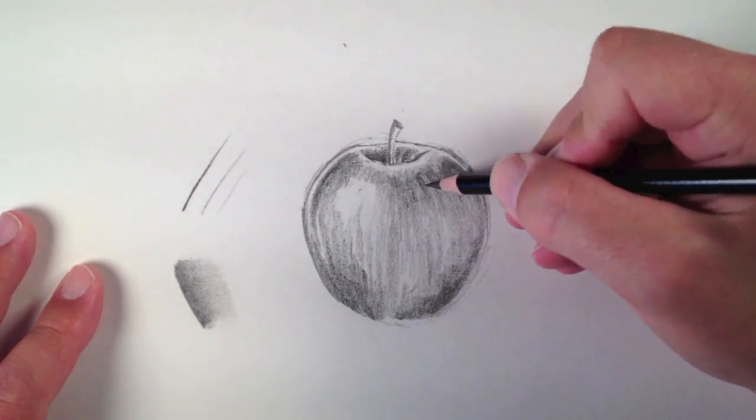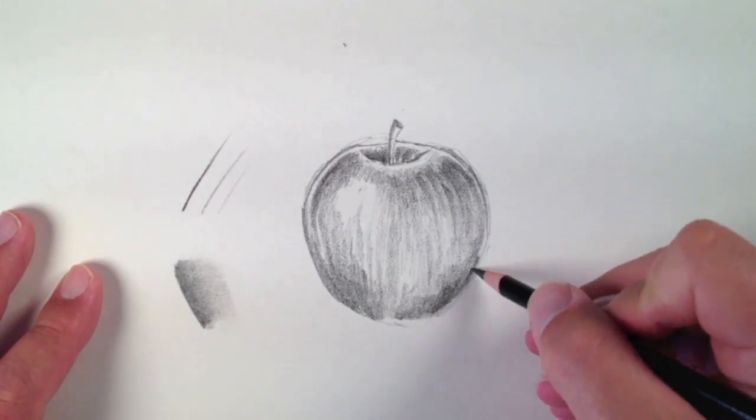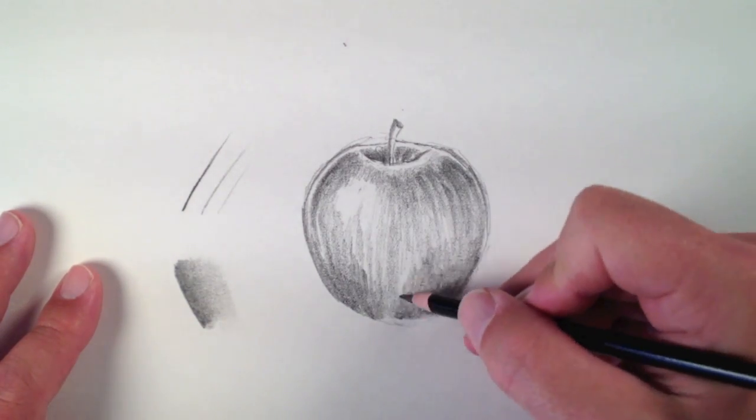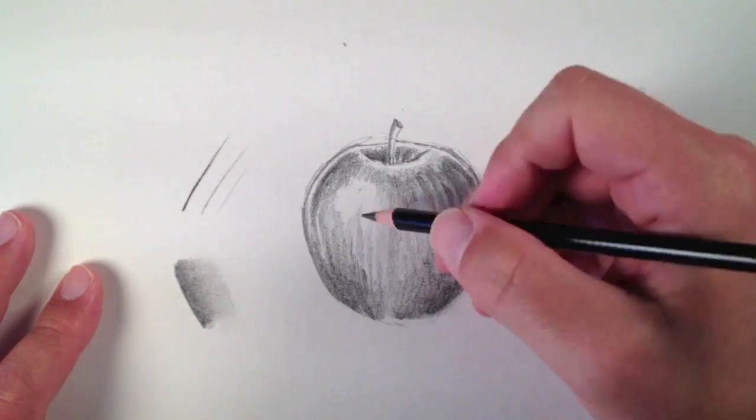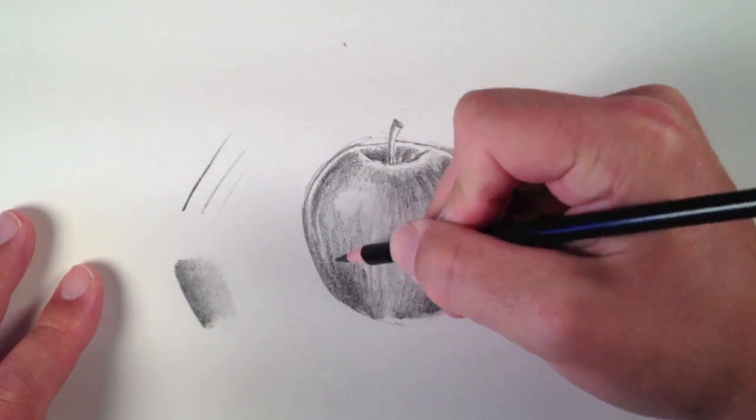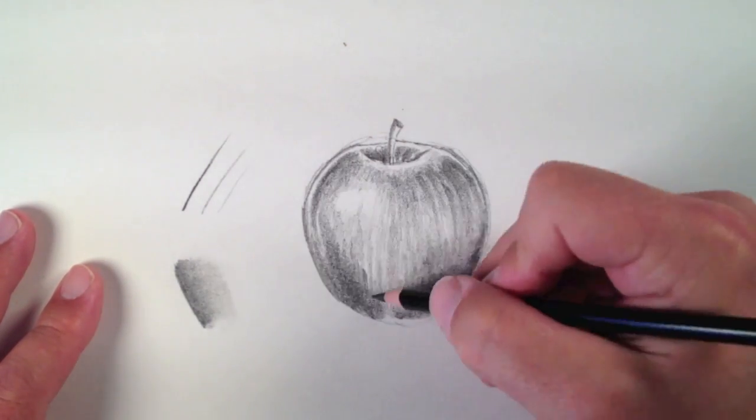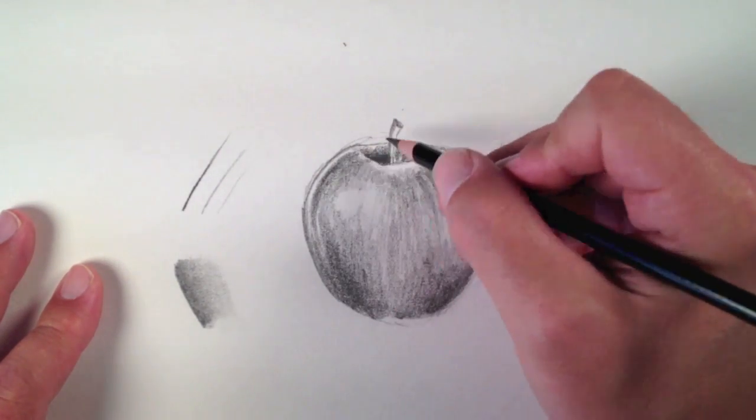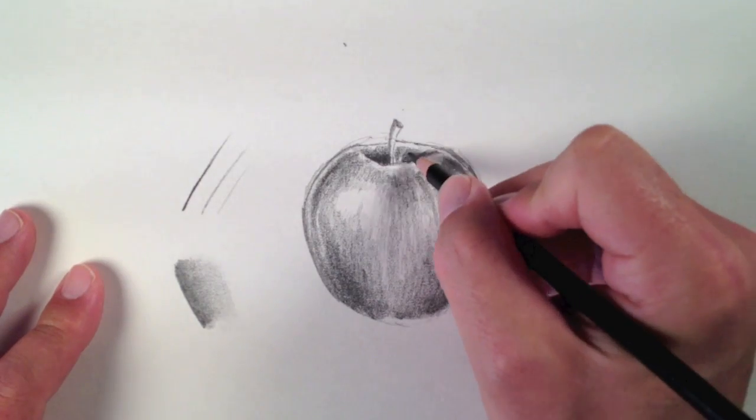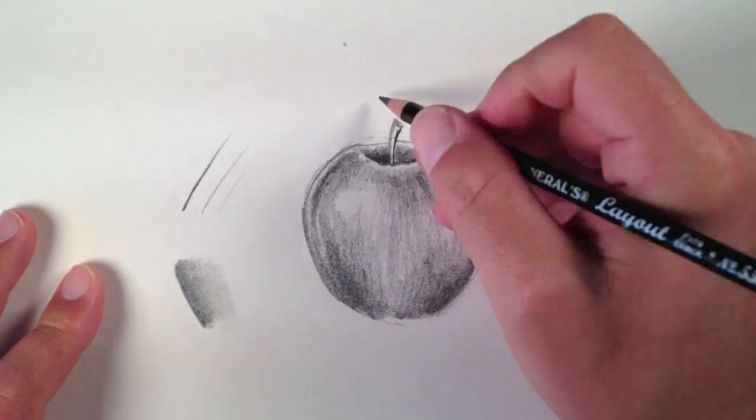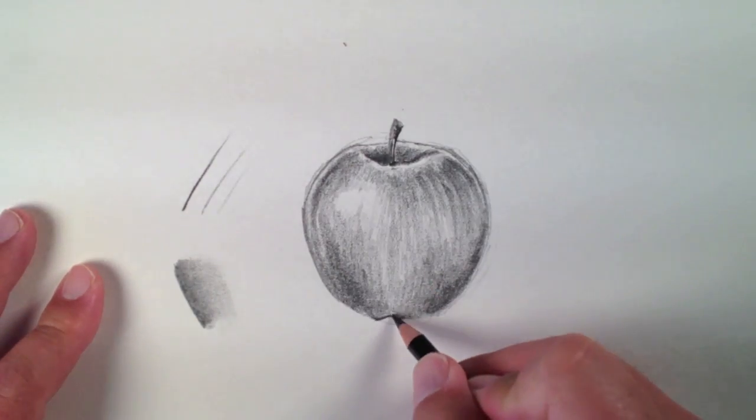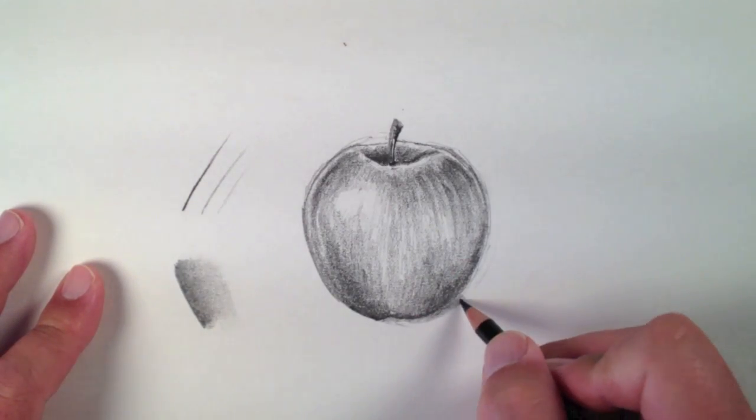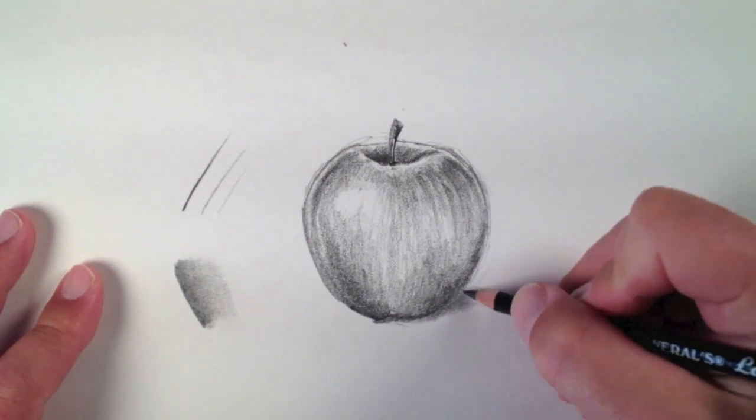Also, since the tip of the pencil stays relatively sharp, I can go back and add precise details with lines if I want to without worrying about having to sharpen my pencil every five minutes or so. One thing to note though: since this graphite is soft, if you go over it with the palm of your hand, you can produce some smudging. But that's true of just about any type of graphite pencil out there.